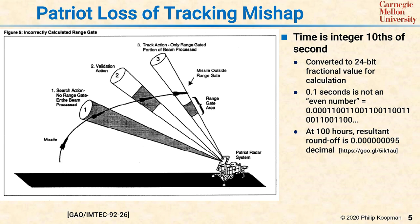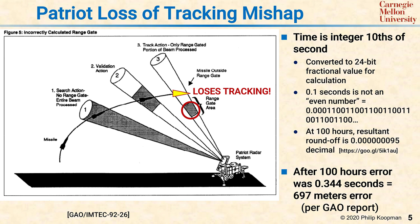In one part of the system, it was integer tenths of a second, but then it converted to a floating point value that accumulated over time. If you keep adding tenths of a second at 100 hours, the round-off error is enough to cause a problem. In this case, after 100 hours of operation of this floating point time value being accumulated in one subsystem and an integer time value in another, the two subsystems disagreed by about a third of a second, which is almost 700 meters.